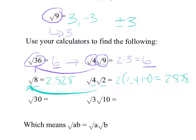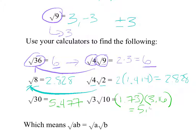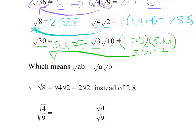Let's try 30. The square root of 30 on a calculator is 5.477. The square root of 3 is 1.73 and the square root of 10 is 3.16; multiply those and you get 5.47—the same thing. So write this in your notes: if you have the square root of A times B, you can split it into the square root of A times the square root of B and do those separately.